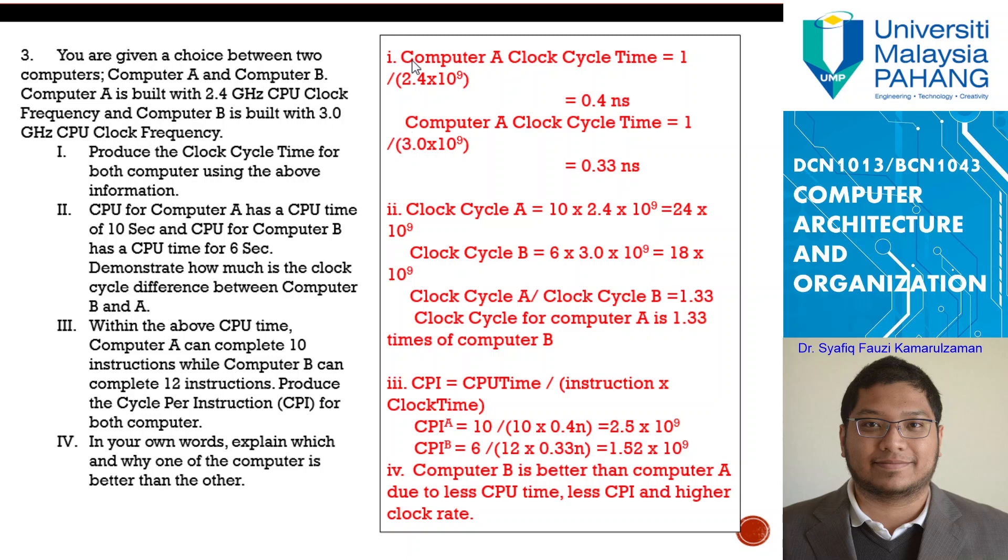Now we start with computer A. How do you calculate that? It's easy. It's just 1 over the clock frequency. Because 1 over clock frequency is equal to time taken for it to complete one cycle. Here 1 over the frequency you get for computer A is 0.4, or here it's supposed to be computer B. Computer B clock cycle time is 1 over 3.0, which is 0.33 nanosecond.